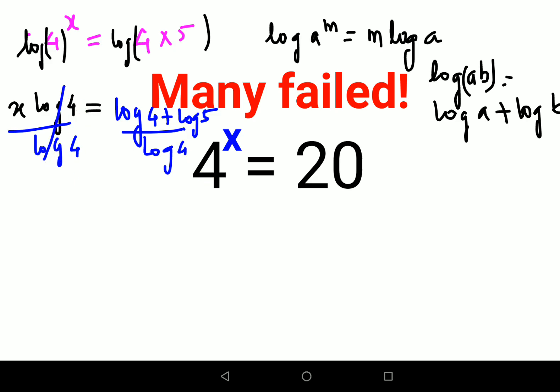So here this is cancelling and we are getting x equals... Let's split the numerator. So log 4 upon log 4 is 1 plus log 5 upon log 4. This is one answer.